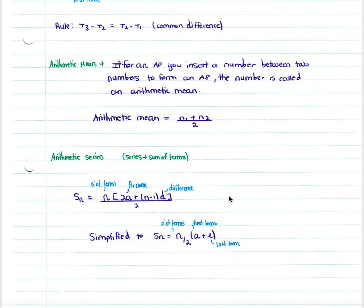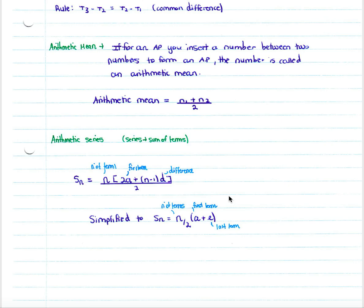An arithmetic series is simply a sequence where you add every term together — it's a sum. When looking at the sum of an arithmetic series, Sn — the sum to n terms — equals n times 2a, where a is the first term, plus n minus 1 times d, being the common difference, all divided by 2.